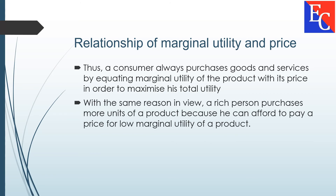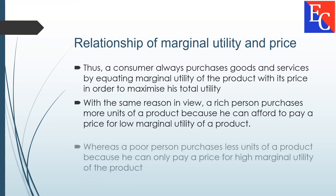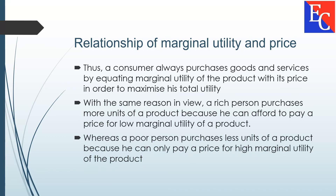With the same reason in view, a rich person purchases more units of a product because he can afford to pay a price for the low marginal utility of a product. Whereas a poor person purchases fewer units of a product because he can only pay a price for the high marginal utility of the product.